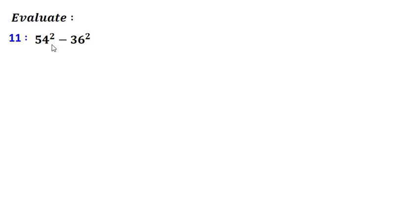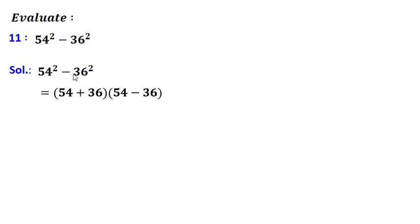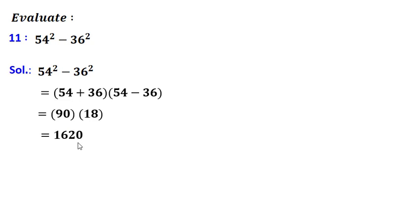Eleventh problem: evaluate 54 squared minus 36 squared. I will use the factorization formula and write this as (54 + 36) into (54 - 36). 54 plus 36 gives me 90, and 54 minus 36 gives me 18, so their product is 1620.